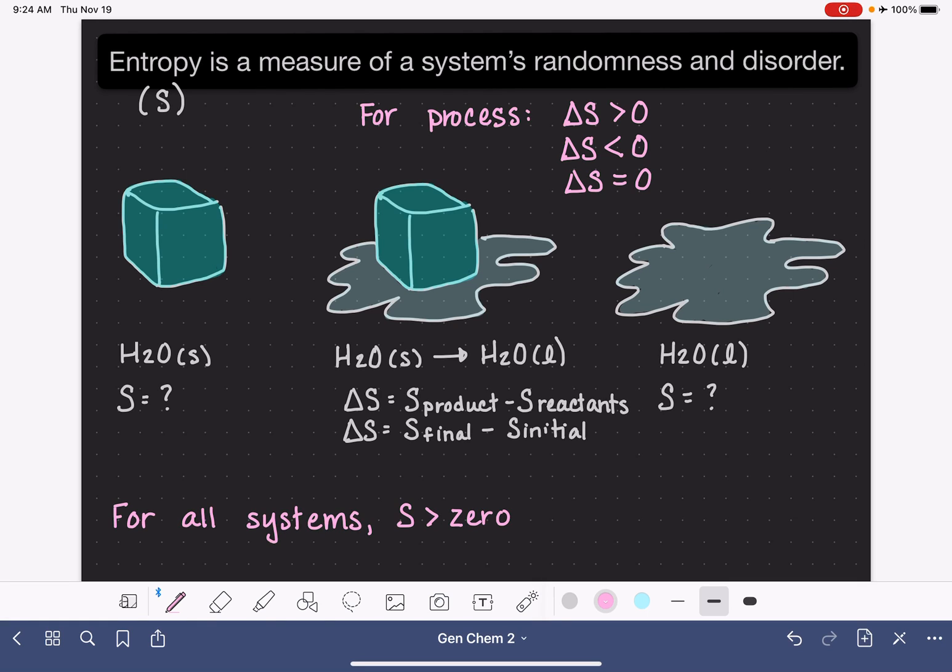If the change in entropy is equal to zero for a process, this just simply means that there is no change to the randomness or the disorder of the system as it undergoes that particular change.